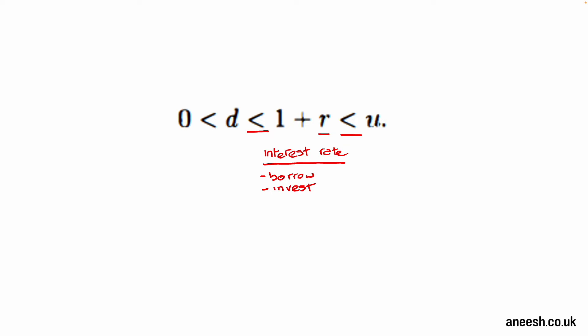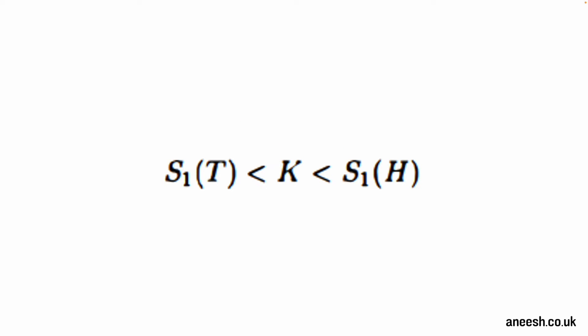This inequality removes the opportunity for arbitrage in the market with regards to the stock price movement and interest rate. The simplicity of the binomial model enables us to highlight the relationship of risk-neutral pricing with arbitrage.